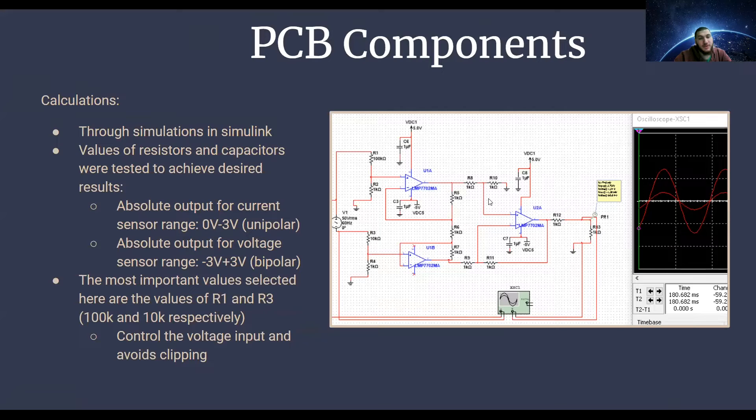After ordering the board, we had to order the various components from the IC chips to the resistors and capacitors on the actual board. We first had to find these values, so we built the circuit in a MATLAB simulation, and we played around with the component values until we reached the desired output for the current sensor of zero to three volts and for the output for the voltage sensor from negative three to positive three volts.